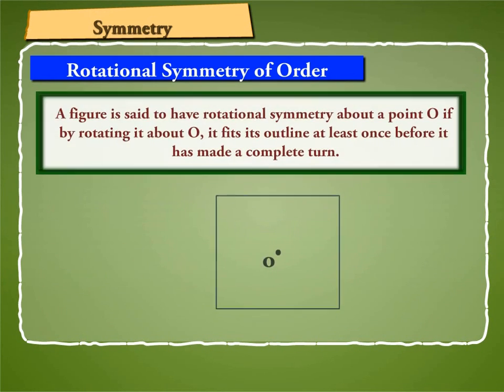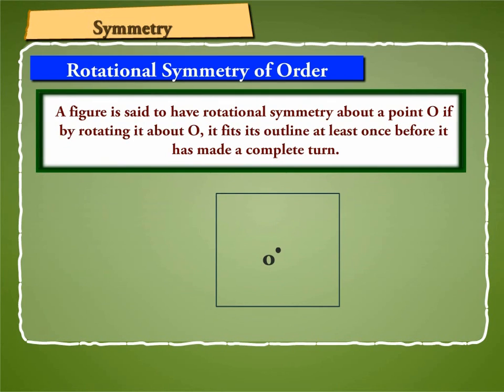Thus, a figure is said to have rotational symmetry about a point O if by rotating it about O, it fits its outline at least once before it has made a complete turn. O is called the center of rotation.